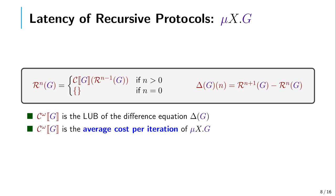The second notion of cost is that of latency of recursive protocols. This is useful when we don't know the number of times a recursive protocol is going to execute. What we compute is the average cost per iteration of the protocol. This average cost per iteration, which we write as ω (omega), is the least upper bound of the difference equation obtained from the cost of executing n+1 times the body of the recursive protocol minus the cost of executing n times the body of the recursive protocol.